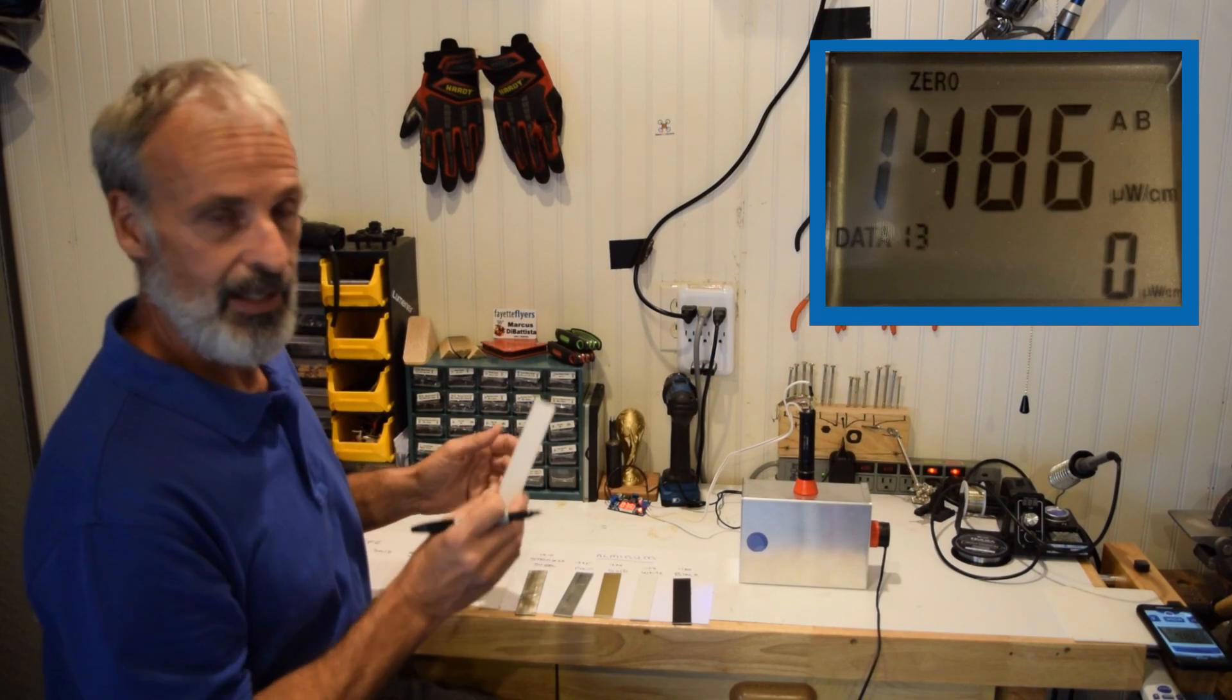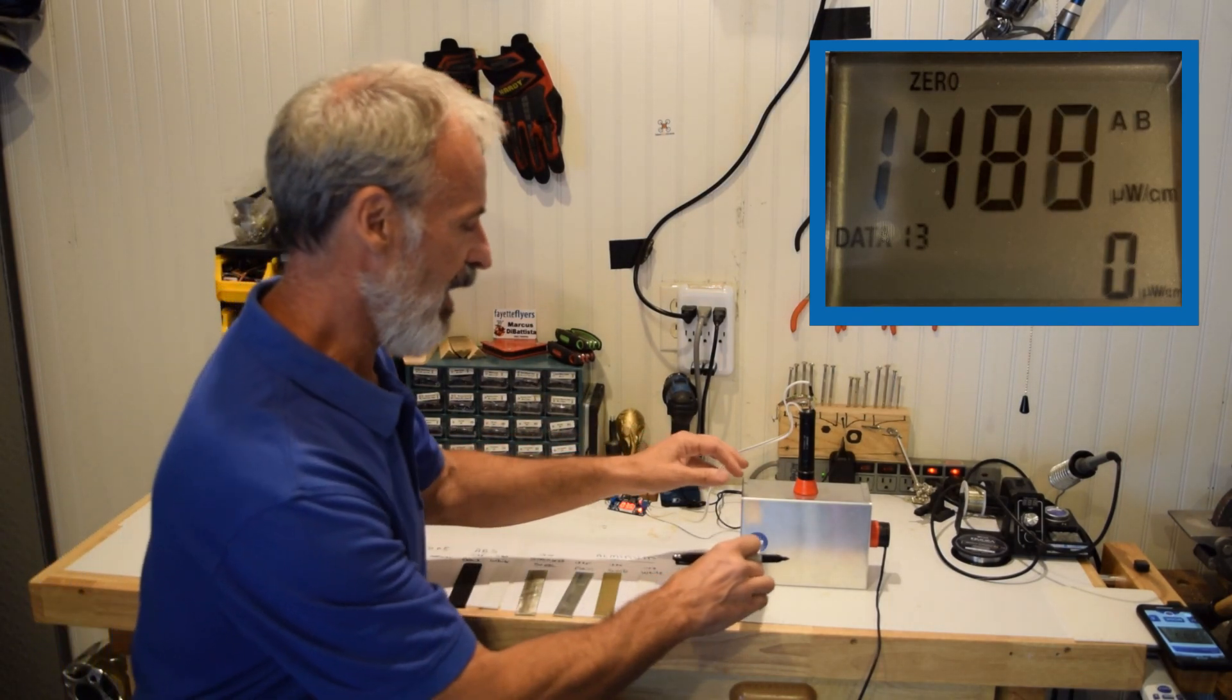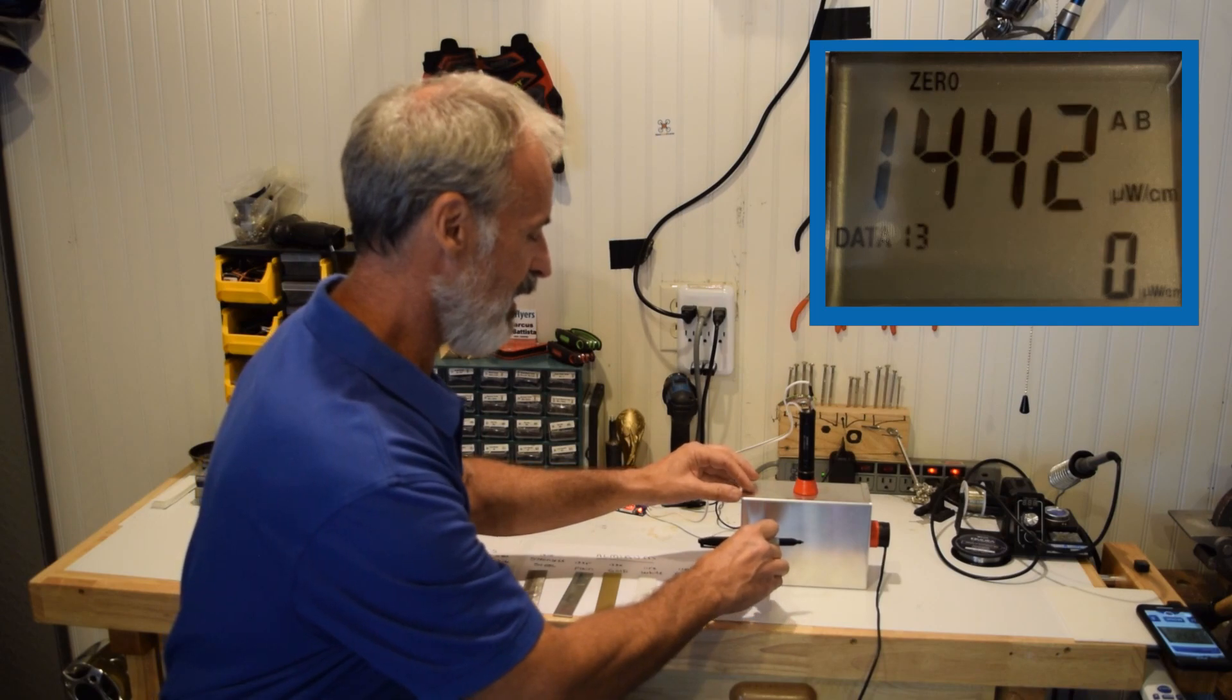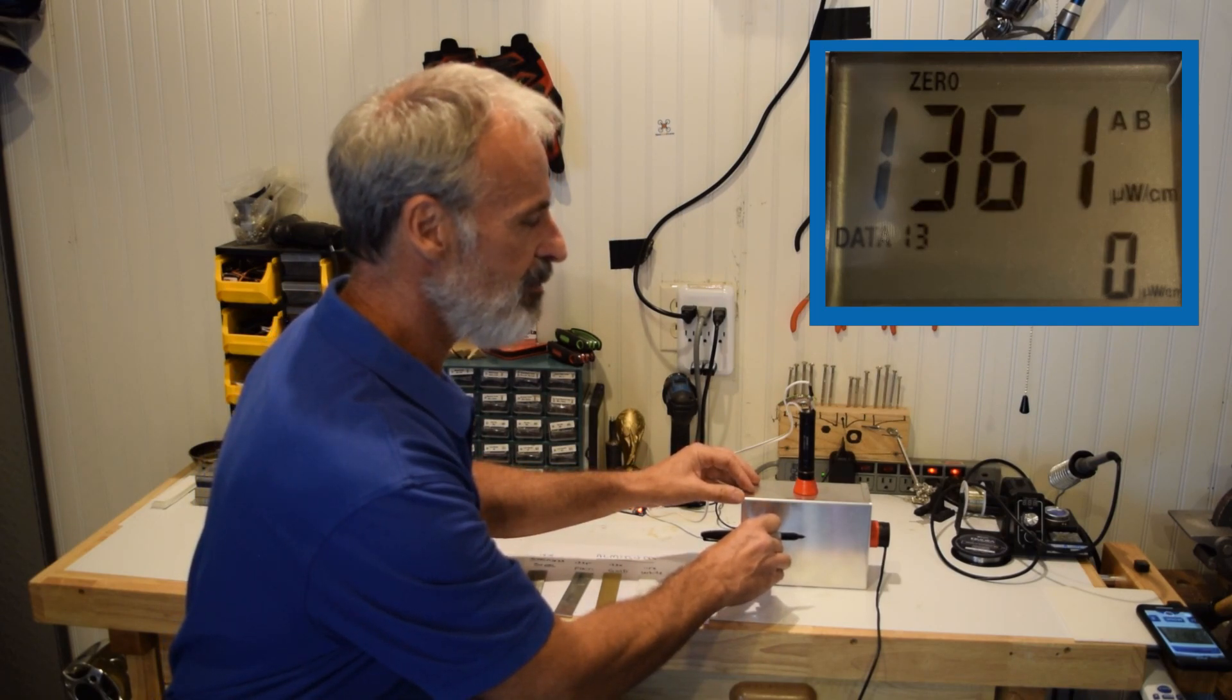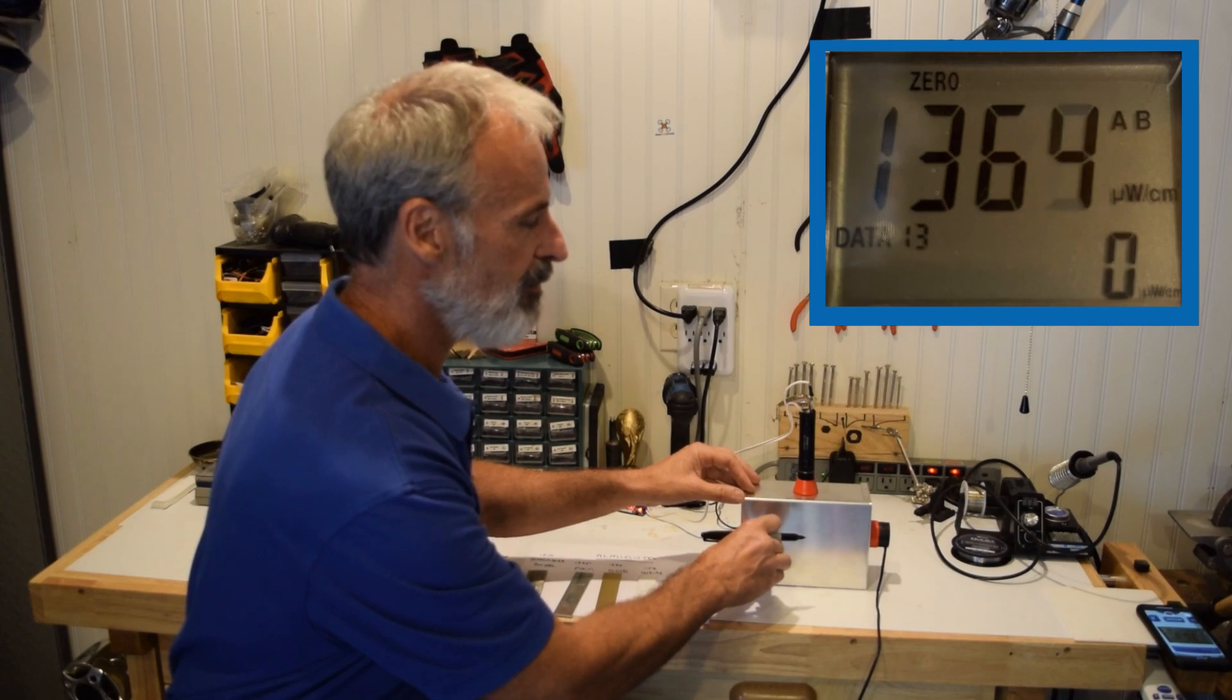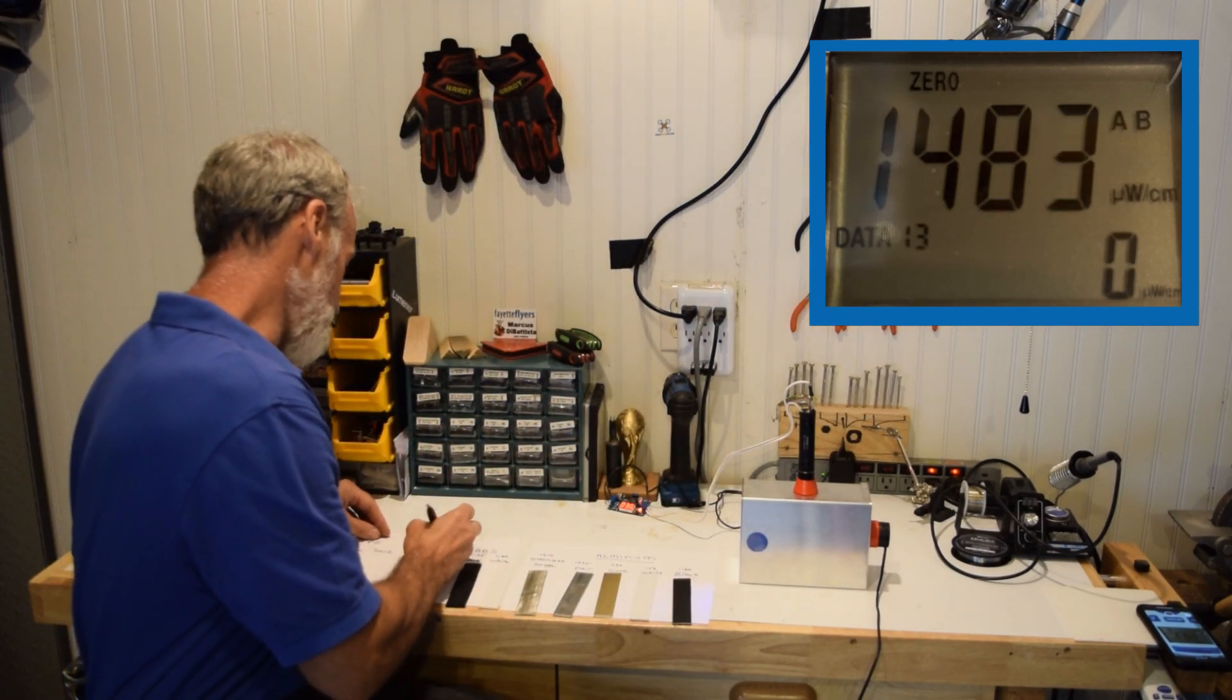Now we're going to high density polyethylene. This will show what happens when you've got something that actually transmits some light and reflects some. So you can see HDPE 1,360. Not too bad.